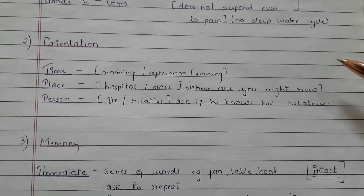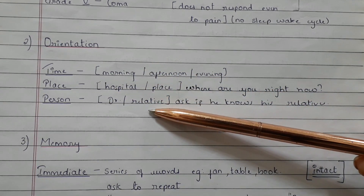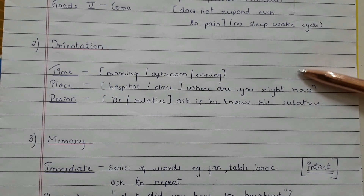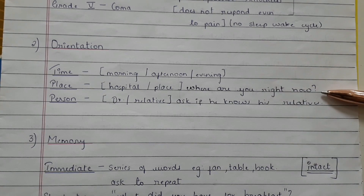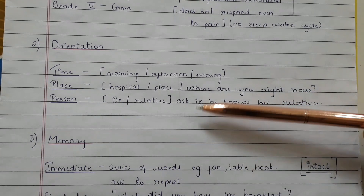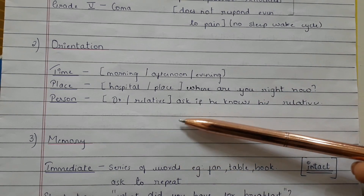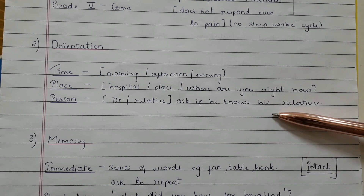The second higher mental function is orientation, which you can check with respect to time, place, and person. For time, ask the patient whether it is morning, afternoon, or evening. For place, ask which hospital, which floor, and which ward they are admitted in. For person, ask the patient if they can recognize or know their relatives.